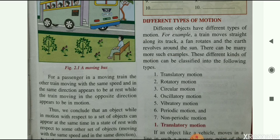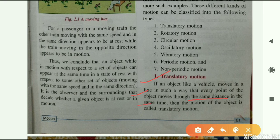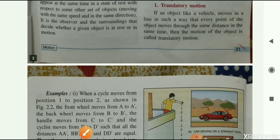First, we will discuss translatory motion. If an object like a vehicle moves in a line in such a way that every point of the object moves through the same distance in the same time, then the motion of the object is called translatory motion.